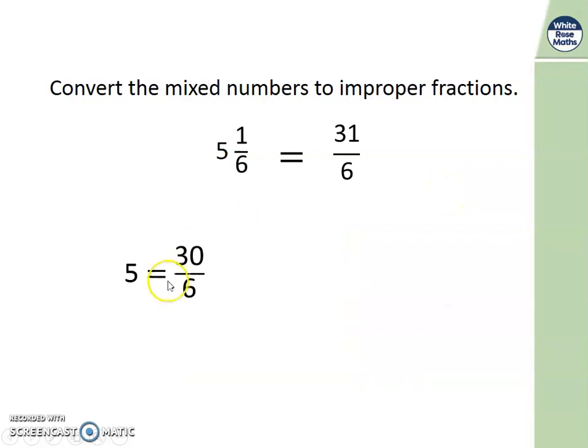Let's have a look at that. So 5 whole ones is 30 sixths. Because 5 times 6 is 30. Then we're adding 1 more sixth on, which is this part of our mixed number. And that makes 31.